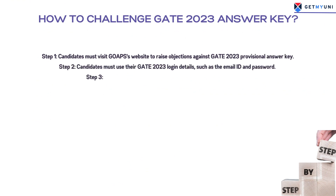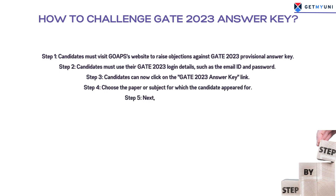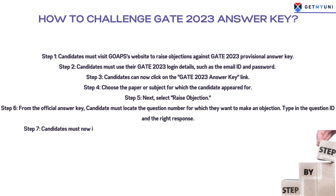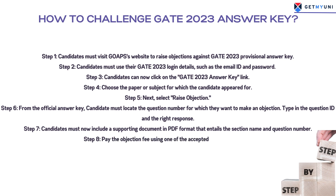From the official answer key, the candidate must locate the question number for which they want to make an objection, then type in the question ID and the correct response. Candidates must also include a supporting document in PDF format that includes the section name and question number. Finally, you will have to pay an objection fee of rupees 500 using one of the accepted payment methods.